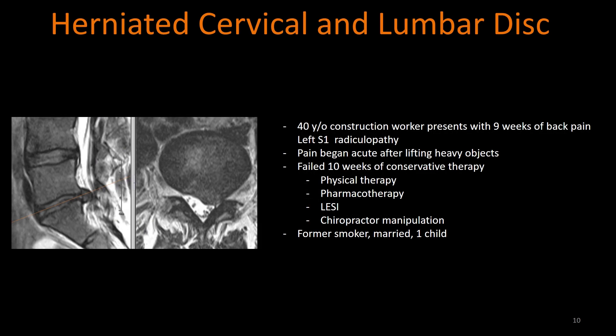Here is another not uncommon example. This is a 40-year-old construction worker who presents with nine weeks of back pain as well as a left S1 radiculopathy. The pain began acutely after lifting heavy objects at work. He failed 10 weeks of conservative therapies, including physical therapy, pharmacotherapy, lumbar epidural steroid injections, and chiropractic manipulation. He's a former smoker, he's married, and he has one child. So how would you code for these cases? In both of these cases, you decide to perform a microdiscectomy.